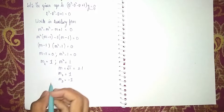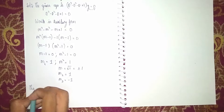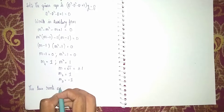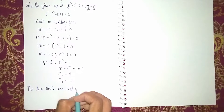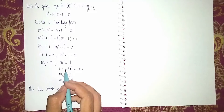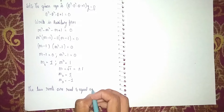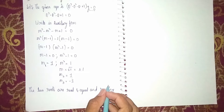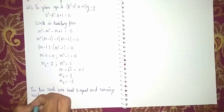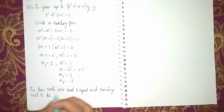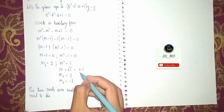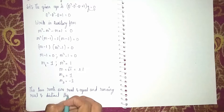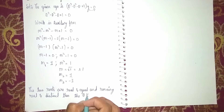Now we apply the general solution formula. The two roots m1 and m2 are real and equal — both are +1. The remaining root m3 = -1 is real and distinct from the others.